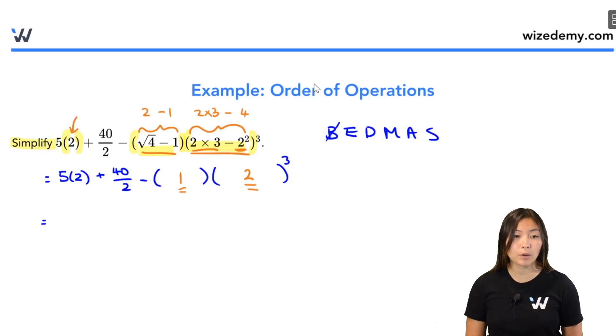Now we need to deal with exponents. We see an exponent right here, 2 to the power of 3. So copy everything else out. And then 2 to the power of 3, that's the same thing as 2 times 2 times 2, 3 times. So that gives us an 8.